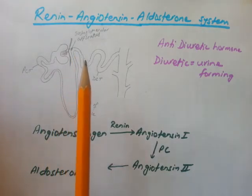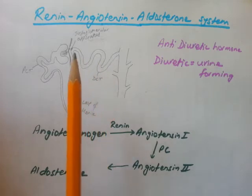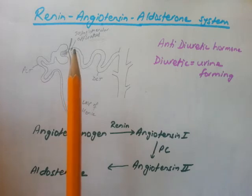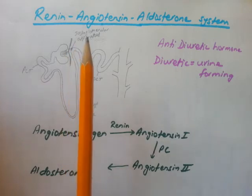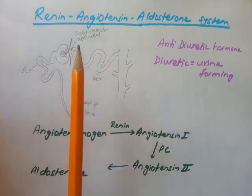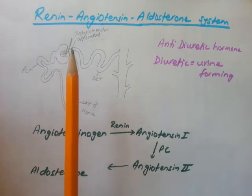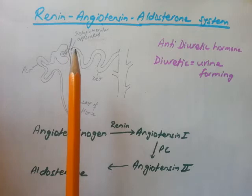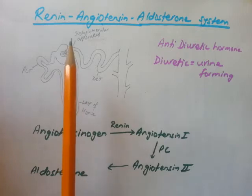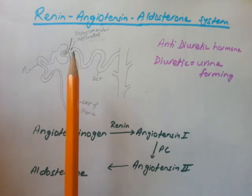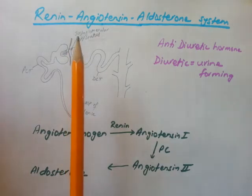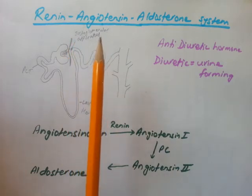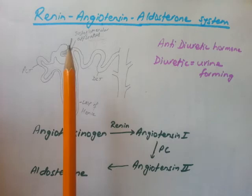After the loop of Henle it becomes the distal convoluted tubule. One part of the distal convoluted tubule has specialized cells that make up the juxtaglomerular apparatus — called juxtaglomerular because it is near the glomerulus. It checks what's in the blood in the afferent arteriole and what's in the fluid in the distal convoluted tubule.